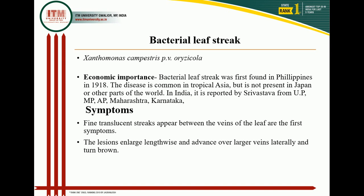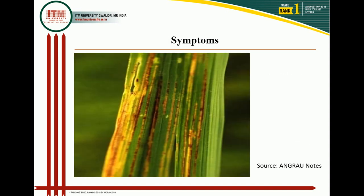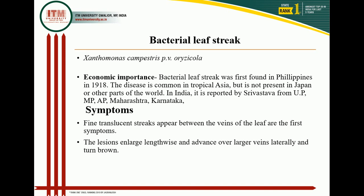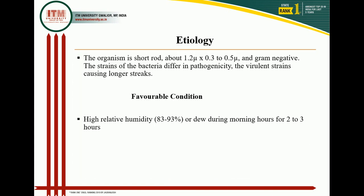IR Jaya and Padma are highly susceptible varieties to bacterial leaf streak. Symptoms: fine translucent streaks appear between the veins of the leaf as the first symptom. You can clearly see small translucent strips in young leaves — this is the initial symptom. The lesions enlarge lengthwise and advance over large veins laterally, turning brown. In susceptible varieties, yellow appears around the lesion and bacteria ooze out, forming small yellow bead-like structures under humid conditions. In severe cases the leaf may dry up and the seed forms prematurely.